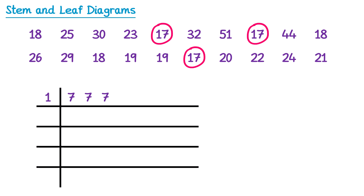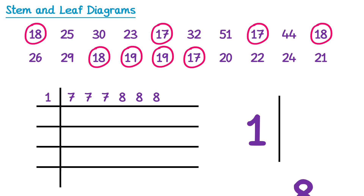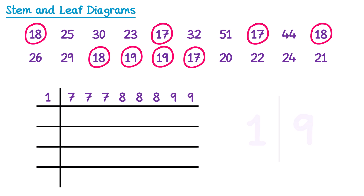Then we move on to the next smallest number, which is 18, and there are also three of those. Splitting 18 gives a stem of 1 and a leaf of 8, so this goes in the same row as the 17. We place three 8s to represent all three 18s. Then we have 19, which has a stem of 1 and a leaf of 9, so we place two 9s in this row for the two 19s.